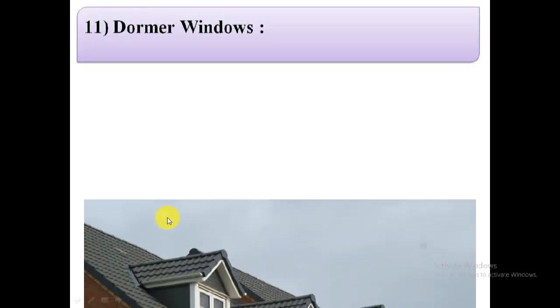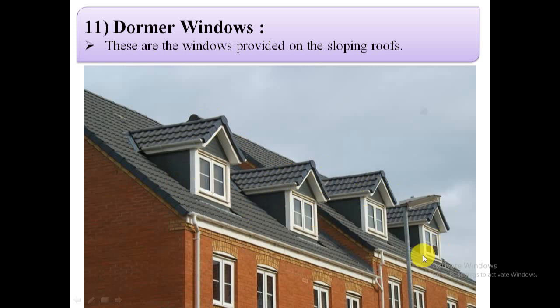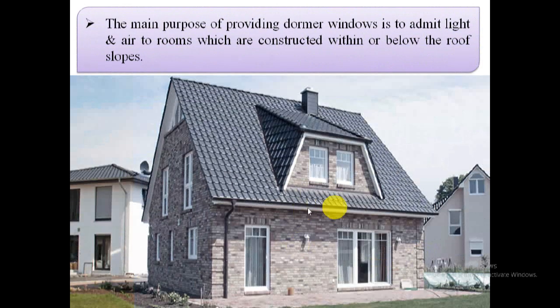The next type is dormer windows. Dormer windows are windows provided on the sloping roof. The main purpose of providing dormer windows is to admit light and air to rooms which are constructed within or below the roof slopes.